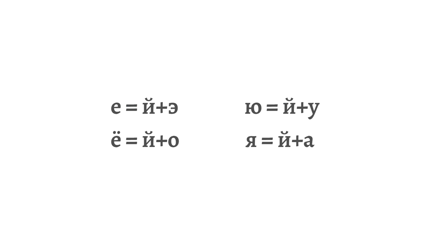Because Tajik borrowed the Cyrillic script from Russian, there are four letters in Tajik which follow Russian convention to represent Y followed by a vowel — these are the yotated letters. For example, Yo is Y plus E, two sounds together, like 'yellow.' Or Yu — Y plus U — like 'useful.'